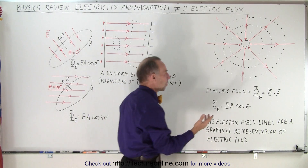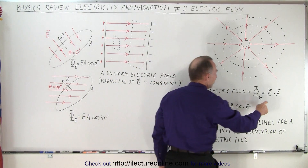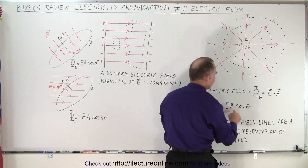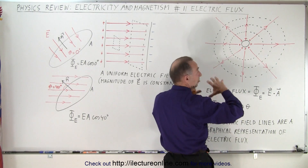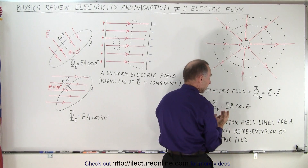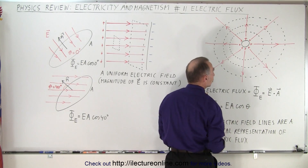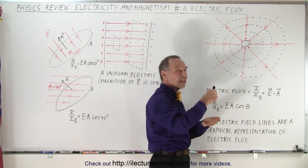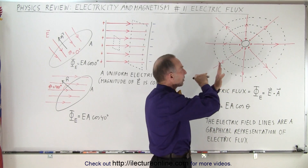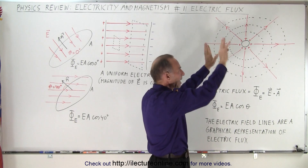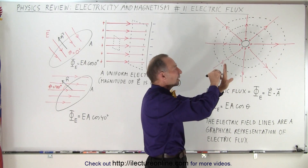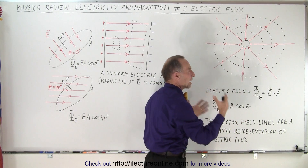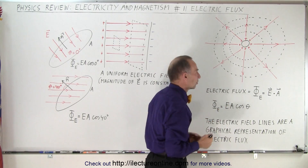That product is the magnitude of the electric field times the magnitude of the area — simply the size of the area — times the cosine of the angle between them. If the electric field lines go through the area perpendicular to the surface, then you have the maximum flux.